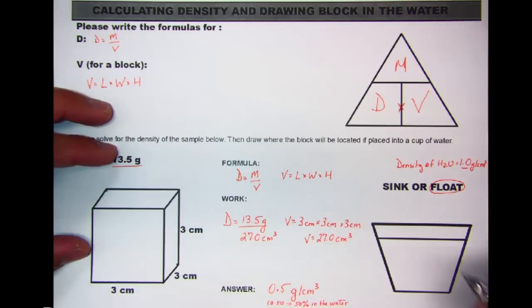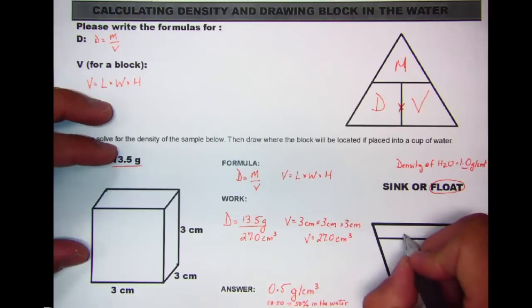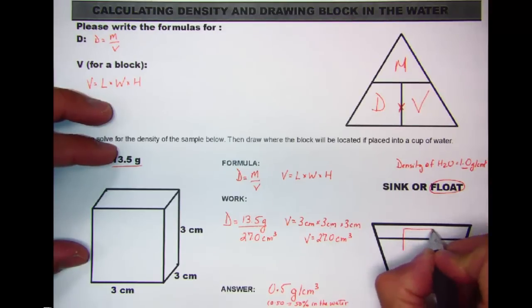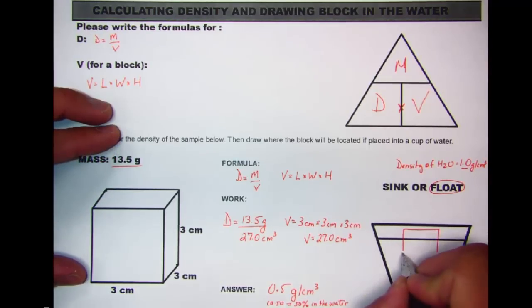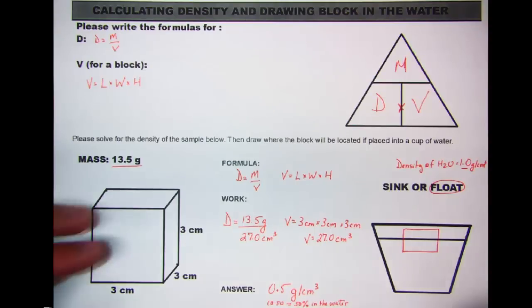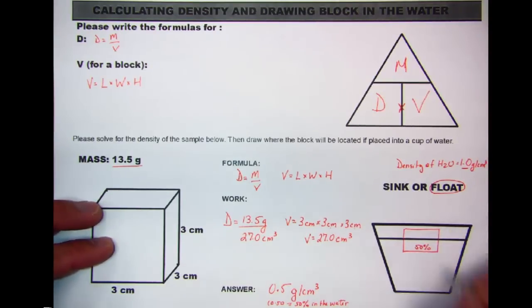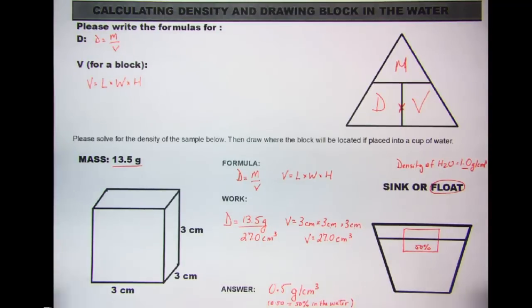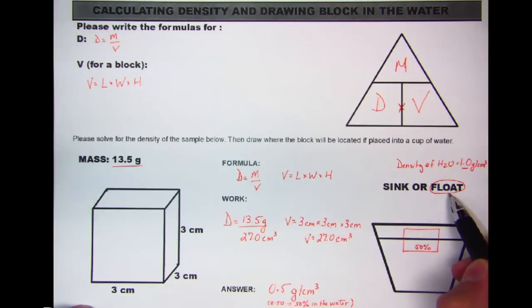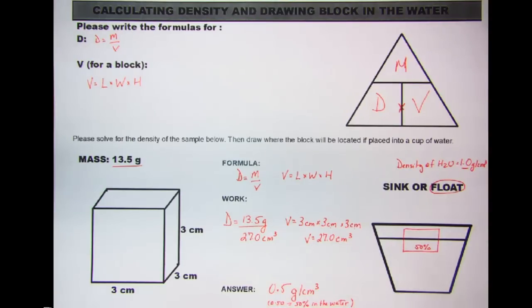So I draw the block in the cup of water with half of it above the surface and half inside the water. You don't have to be exact, but close enough — eyeballing it, about half. You can write the percentage in the drawing to be clear. That's how you solve a density problem, use the volume equals length times width times height equation, determine whether the object sinks or floats, and if it floats, how much of it sits inside the water. Thank you for your time.